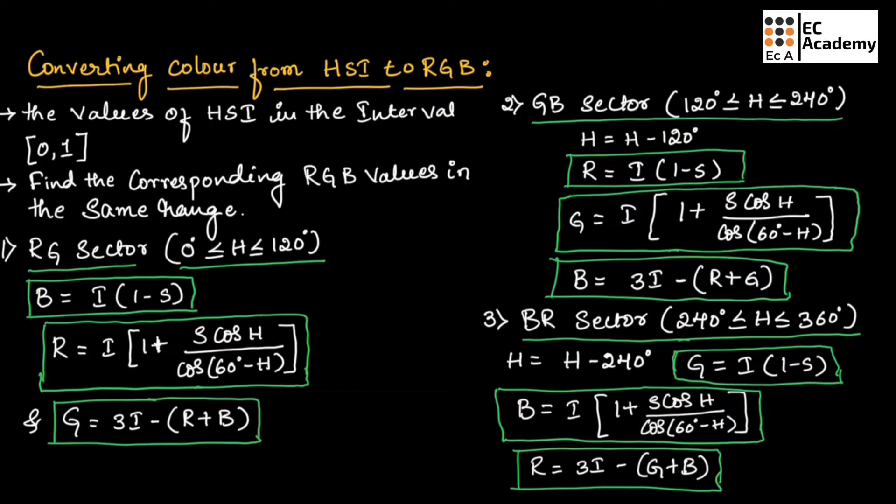There are three sectors corresponding to 120 degree interval in all three sectors. In the first sector, which is RG sector, the value of H will be between 0 degree and 120 degree. At that case, we can find the value of B as I into 1 minus S, and R as I into 1 plus S cos H divided by cos 60 degree minus H, and G as 3I minus R plus B.